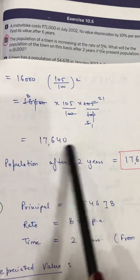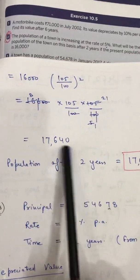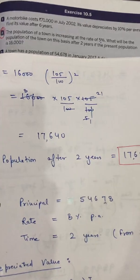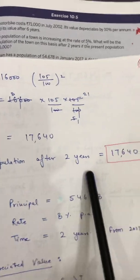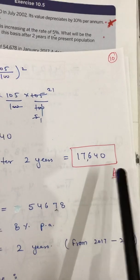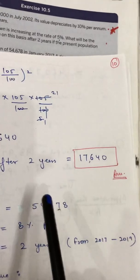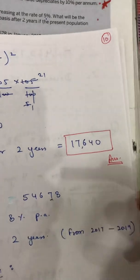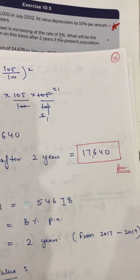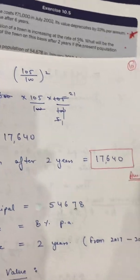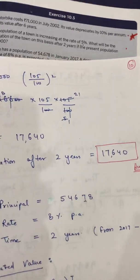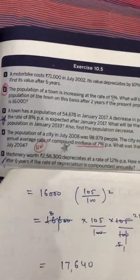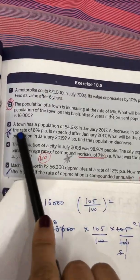The answer is 17,640. Therefore, the population after two years is 17,640 people. You can write 'people' or 'population' here — but do not write rupees, as this is a population question.